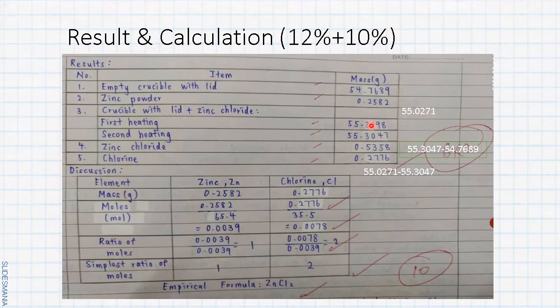Then this is the mass after first heating, then second heating. You check the difference between the first and second heating, not at 0.02. Then the experiment is completed. After that, what is the mass of zinc chloride?